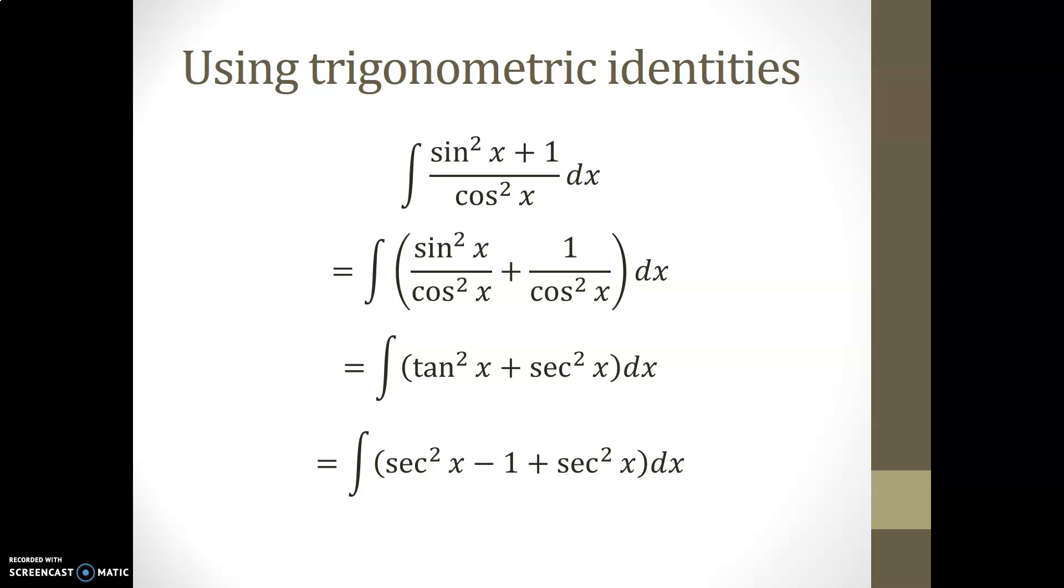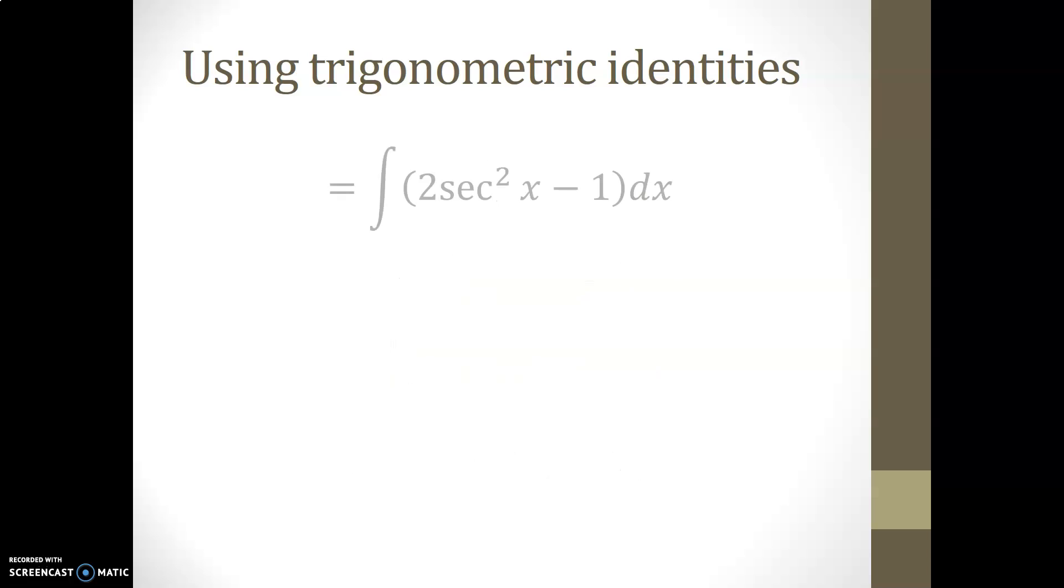So in the first step, we used the splitting the numerator approach, and at this point we're using trigonometric identities. So what we can do now is collect the secant squares together. There are two of them, and those antiderivatives lead to tan 2 tan of x minus x plus k again.